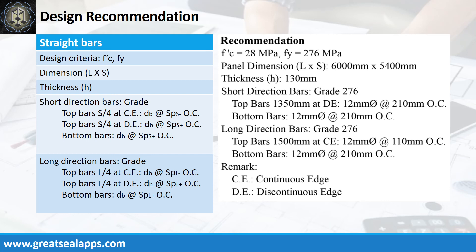FC' equals 28 MPa. FY equals 276 MPa. Panel dimension is 6,000 mm by 5,400 mm. Thickness is 130 mm. Short direction bars of grade 276 — top bars: 1,350 mm at discontinuous edge, 12 mm bar at 210 mm on center; bottom bars: 12 mm bar at 210 mm on center. Long direction bars of grade 276 — top bars: 1,500 mm at continuous edge, 12 mm bar at 110 mm on center; bottom bars: 12 mm bar at 210 mm on center.